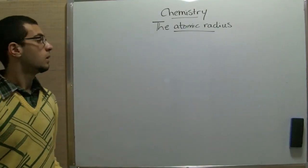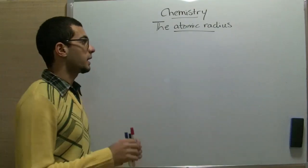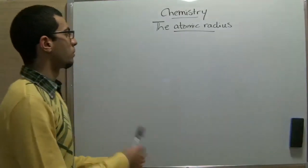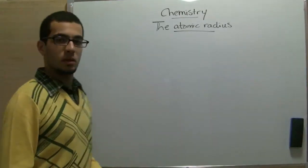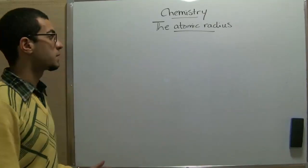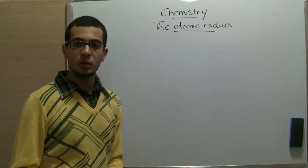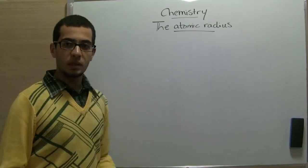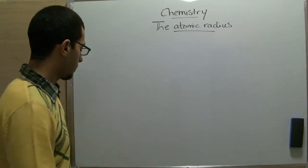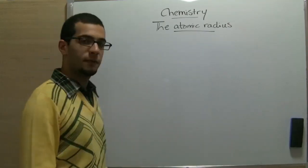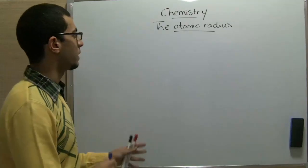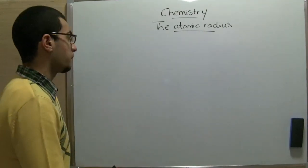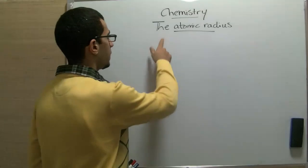Assalamu alaikum, welcome back. Today we will talk about the atomic radius. Previously we talked about the periodic table and the classification of elements inside the periodic table. There are some properties of atoms which are revealed through that classification, and the first one is the atomic radius.